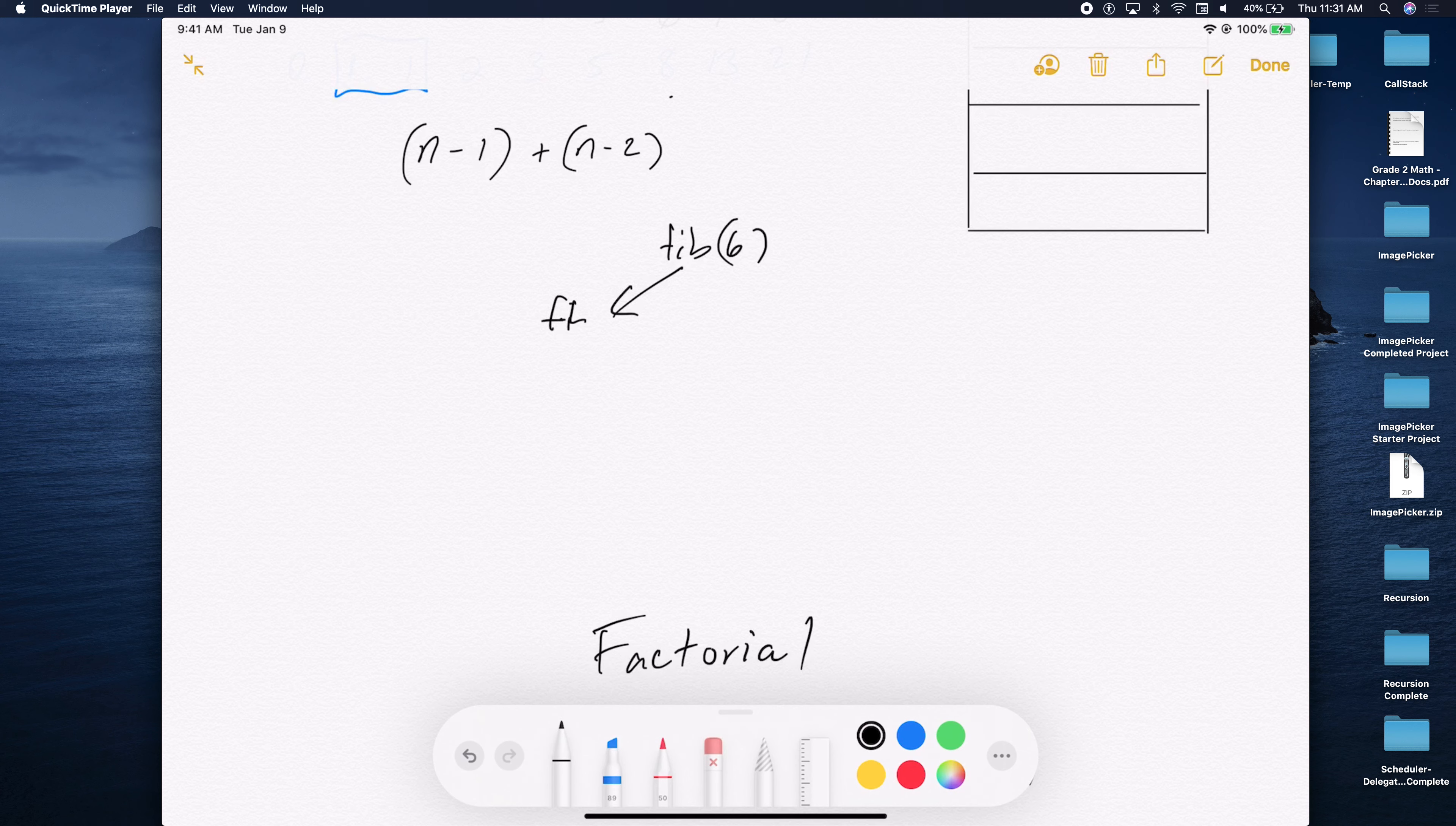So that takes us to the left side here. So that would be Fib of 5. Using the same formula, what would be the right side? What would be n minus 2? 4. So that would be Fib of 4. Okay, let's keep going here. What is the left side of Fib 5? 4 and 3. So this is Fib 4, and this is Fib 3. And let's do 4. 3 and 2.